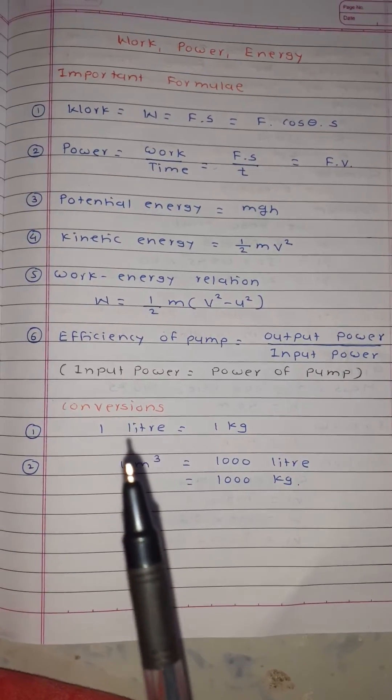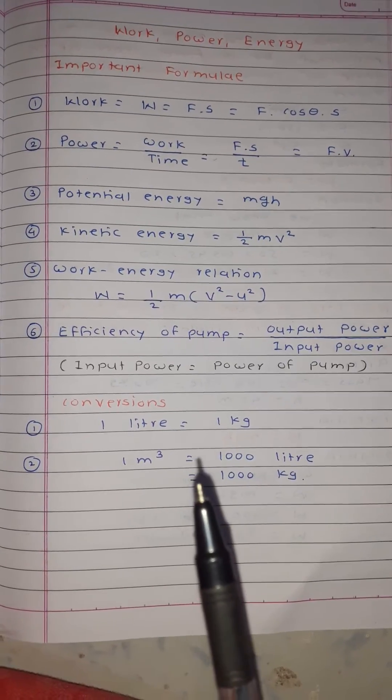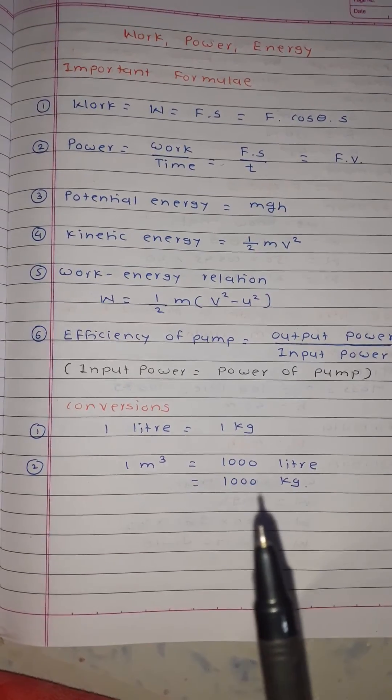Some conversions are here. One liter = 1 kg. One m³ = 1000 liters or 1000 kg.